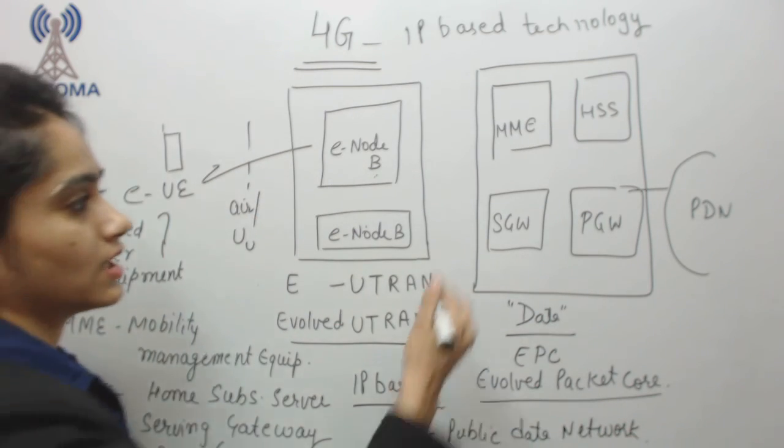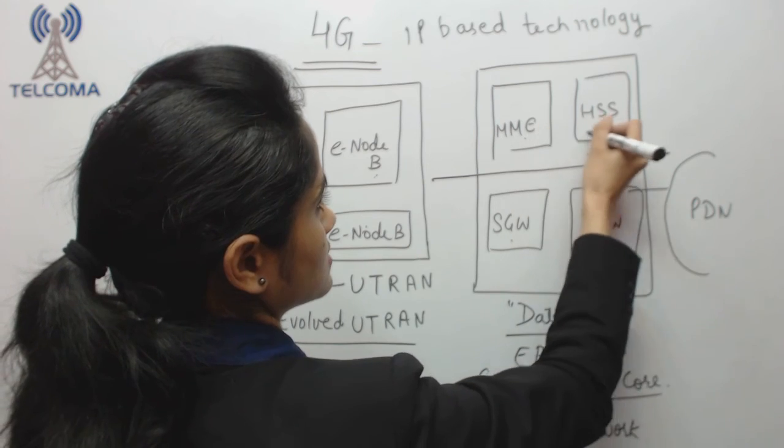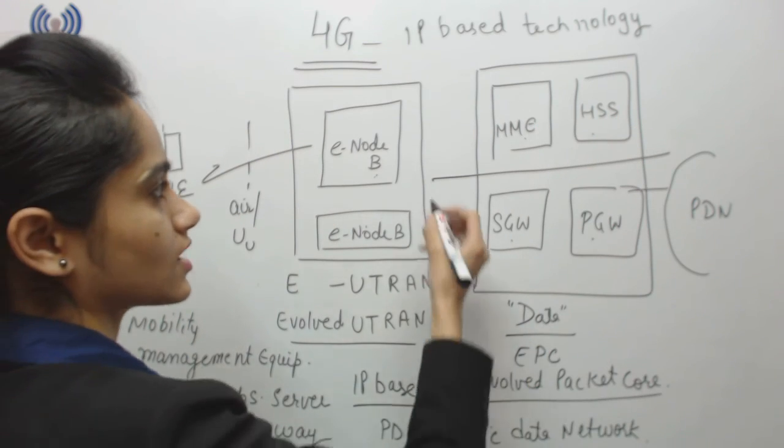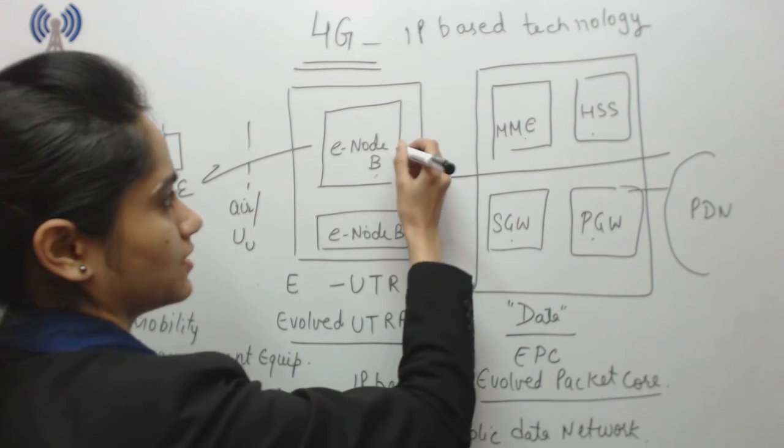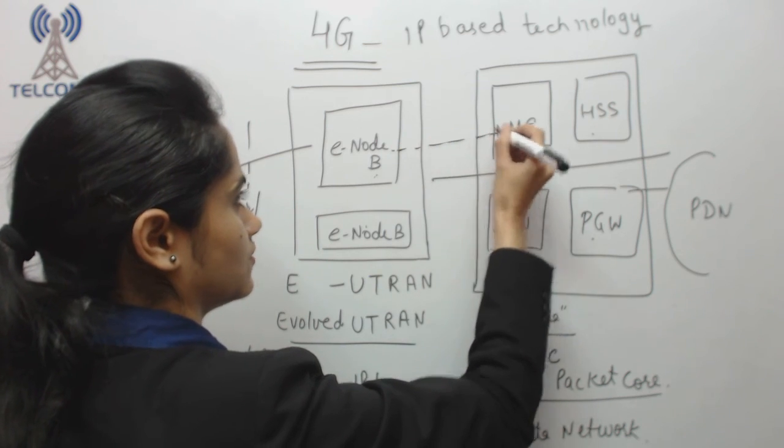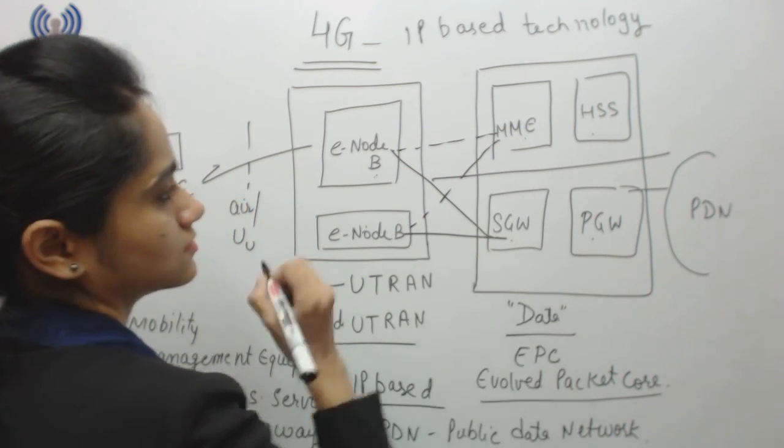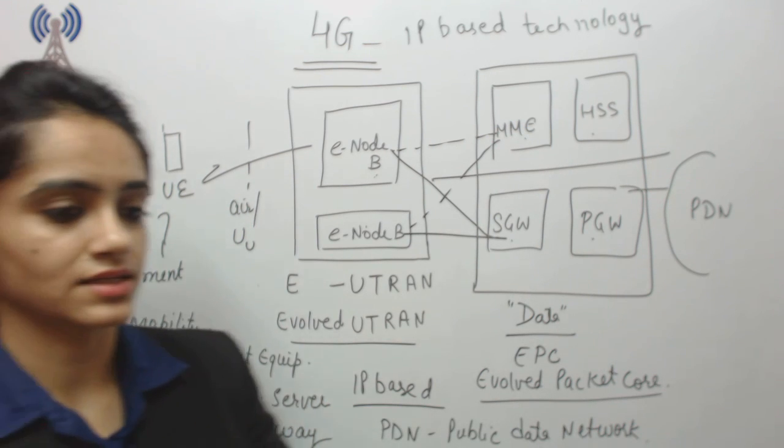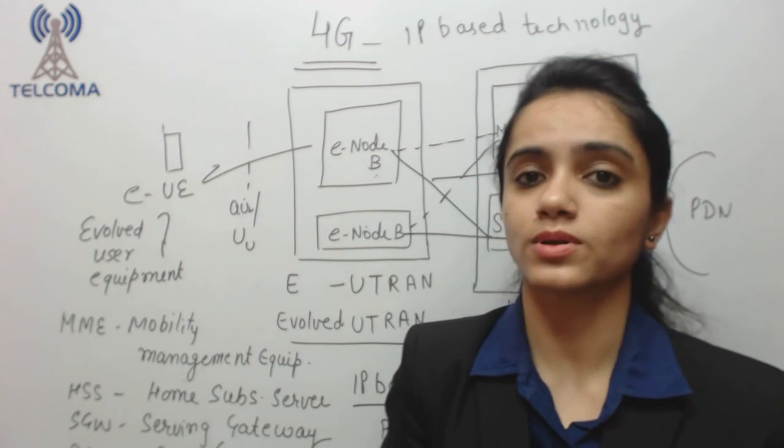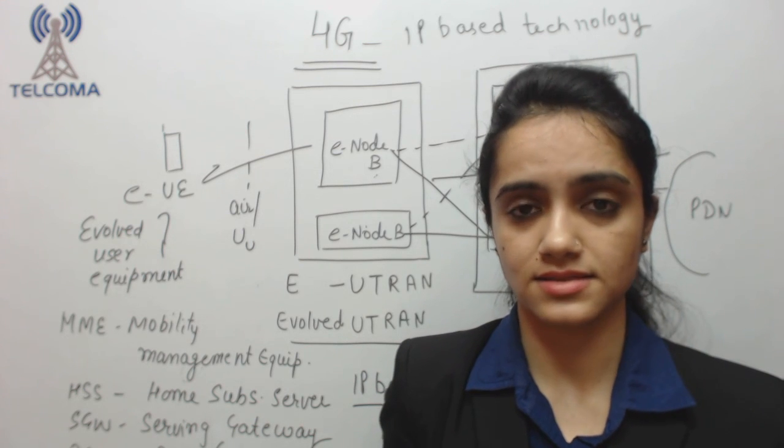So in network architecture we have this user databases and this is for signaling. So this is the network architecture. Now E node B is attached to MME as well as serving gateway. So this is about architecture description of 4G. We will continue with this class in our next class, thank you so much.